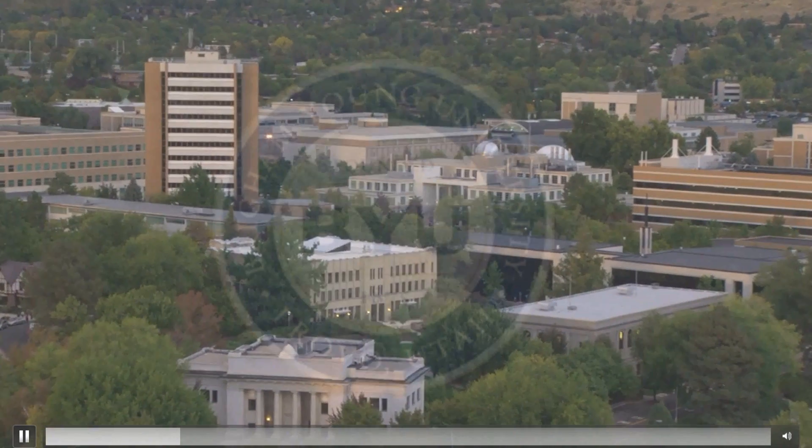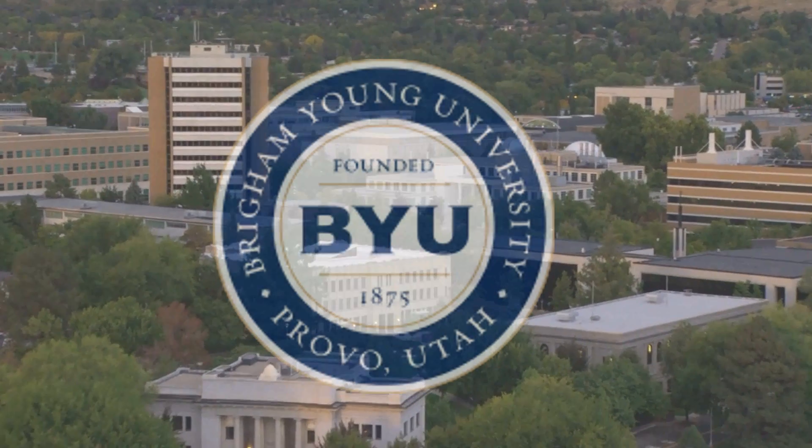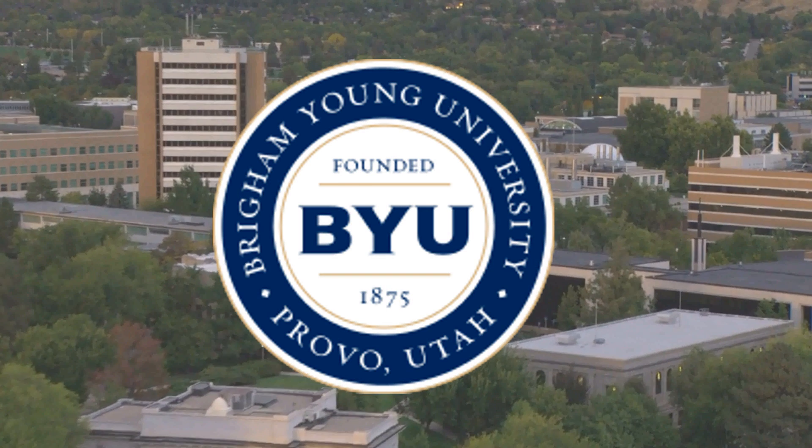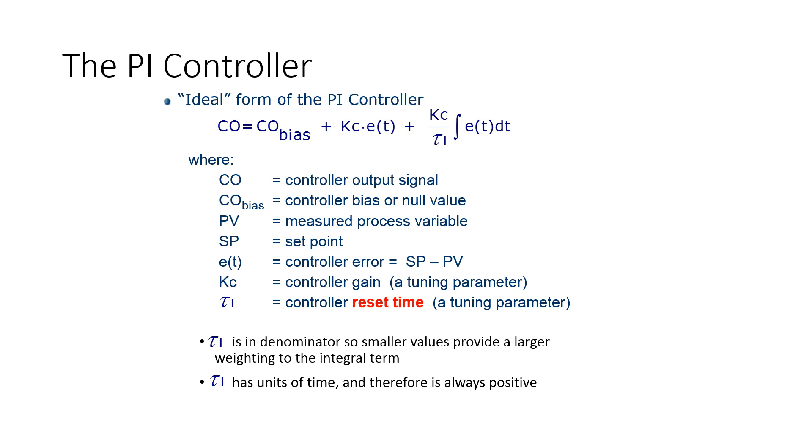Welcome back to Process Dynamics and Control. We're going to be talking about proportional integral controllers today, and particularly adding this new term, this integral term. Previously, we discussed a proportional only term where the controller output equals a bias, a constant value, plus a proportional term proportional to the error, which is the set point minus the process variable.